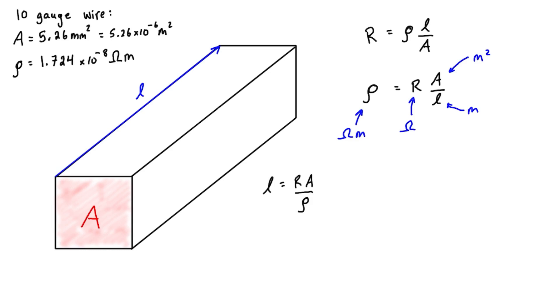So let's plug these into the expression. Again, we wanted to find what length of this wire are we going to need to get 4.5 ohms of resistance. So we're going to plug in 4.5 ohms as our value of R, and then 5.26 times 10 to the negative 6 meters squared for the cross-sectional area of our 10 gauge wire. And then this is all divided by the resistivity, which is 1.724 times 10 to the negative 8 ohm meters.